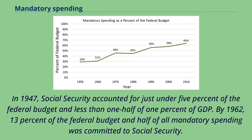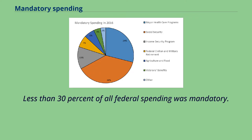By 1962, 13% of the federal budget and half of all mandatory spending was committed to Social Security. Less than 30% of all federal spending was mandatory at that time.